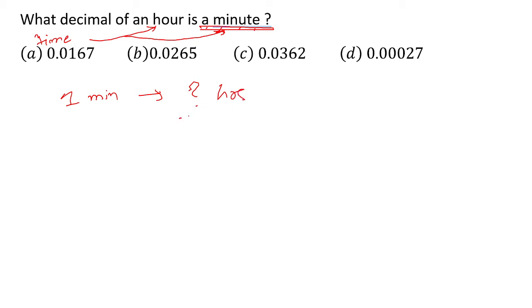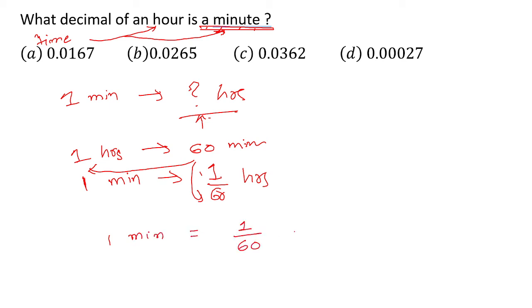That is what we need to find out. We know that one hour equals 60 minutes, hence one minute equals one divided by 60. So one minute equals one divided by 60.